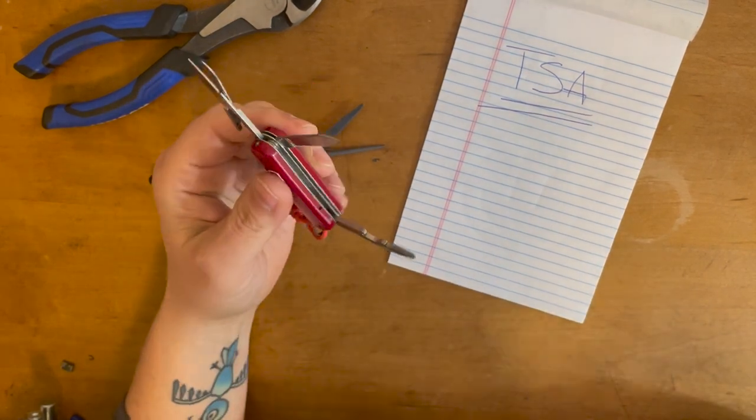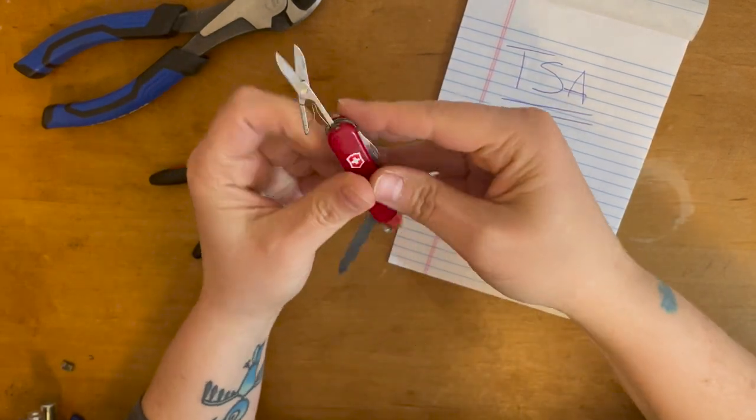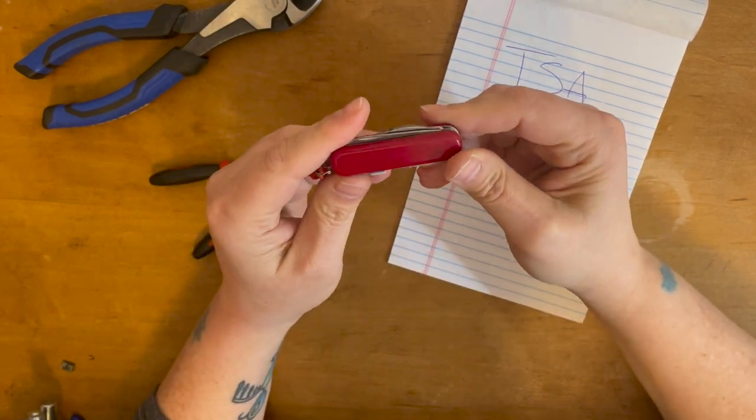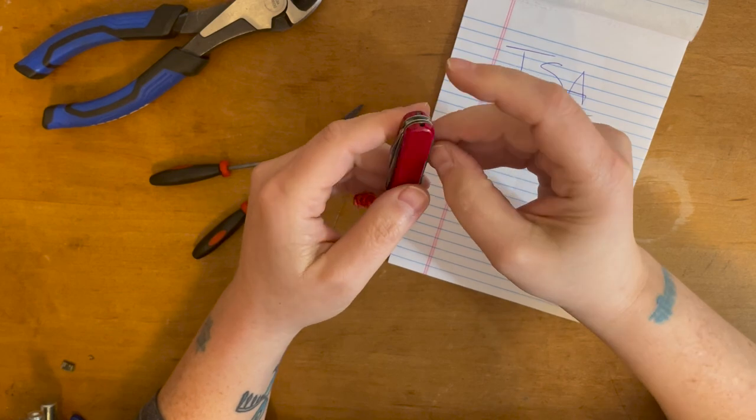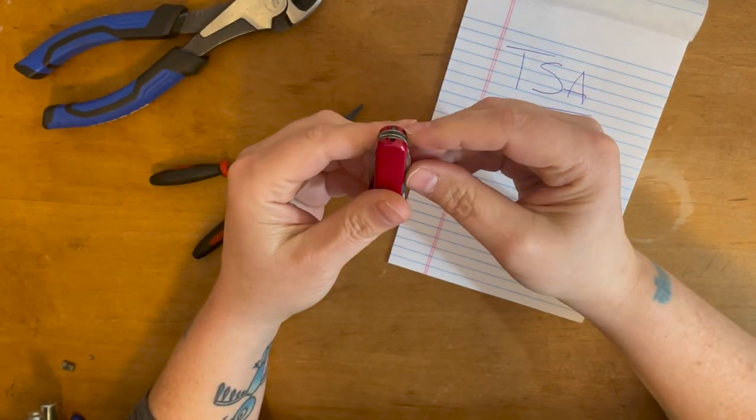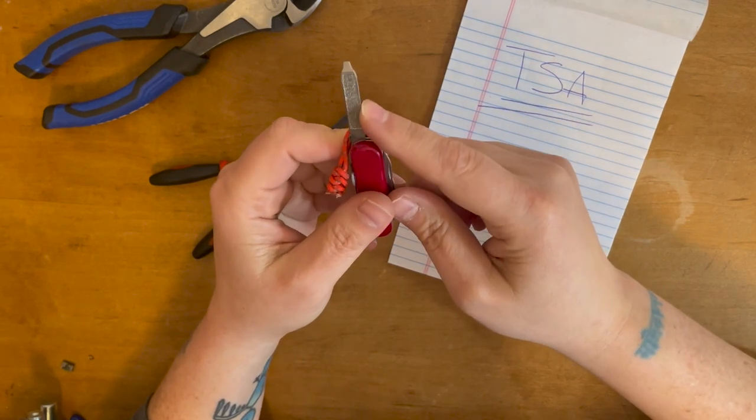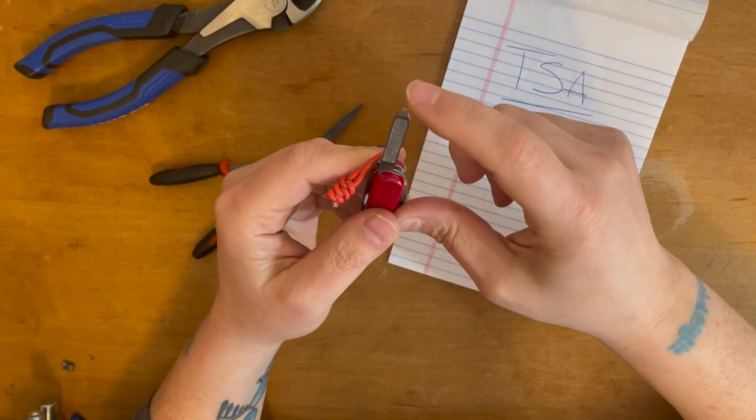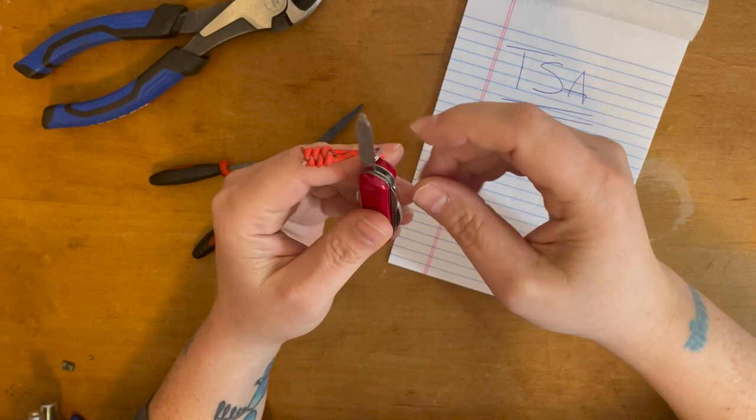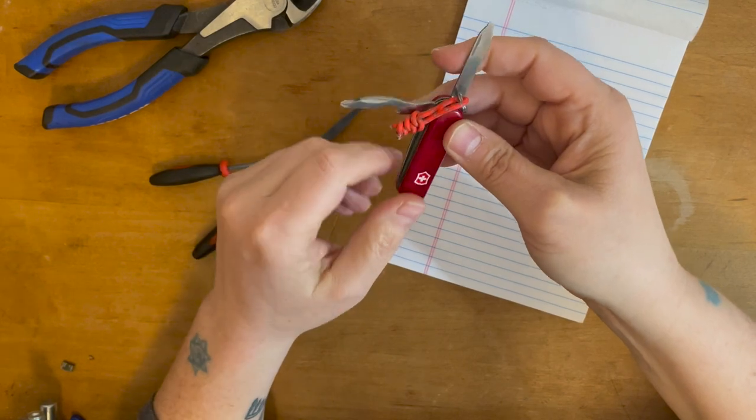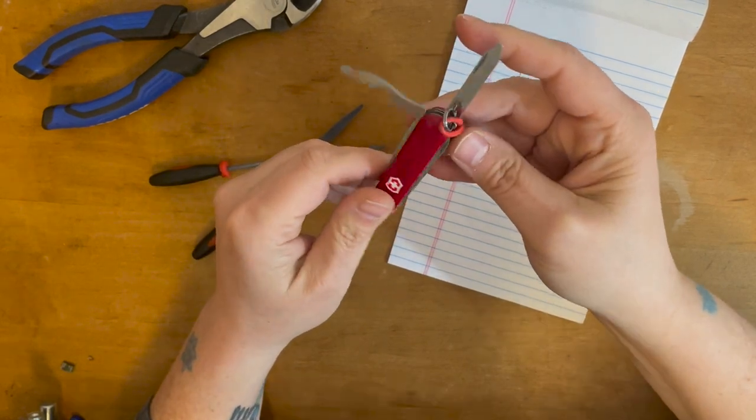So I thought to myself, what can I do to mimic this Midnight Manager and keep myself happy? There's the Jet Setter, but a lot of people have rightfully complained that Victorinox did not include this obvious nail file to keep a dedicated flat tip instead of just the Phillips on this multi-tool. I think that was a big miss there.